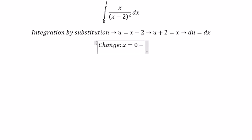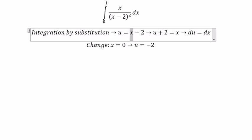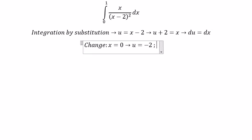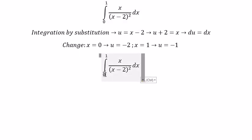0, then u should be negative 2. We put 0 in here to find the value of u. If x equals 1, then u should be negative 1.